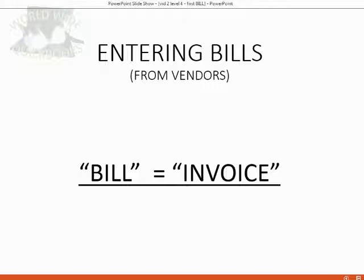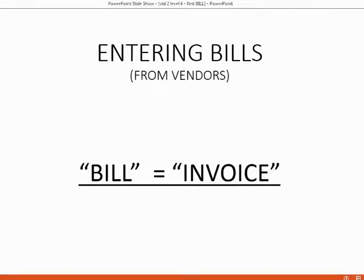In the customer section, an invoice was a document we sent to a customer to ask them for something they promised to pay. A bill is the same thing, except in QuickBooks we use the word bill when the vendor sends the document to us to ask us to pay for something we owe. So bill and invoice mean the same thing — it's called a bill if you received it from a vendor, and an invoice if you send it to a customer.